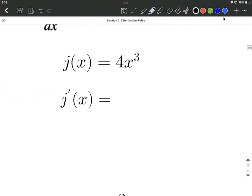What about four times x to the third power? Well, the constant can come along, and then we'll really just focus on the derivative of x cubed. So the three comes down in front, the exponent comes down, and we reduce the exponent by one.